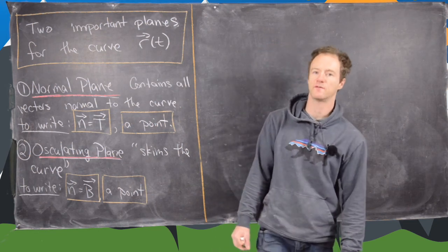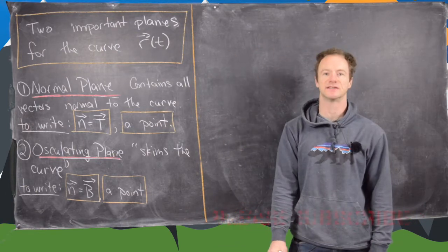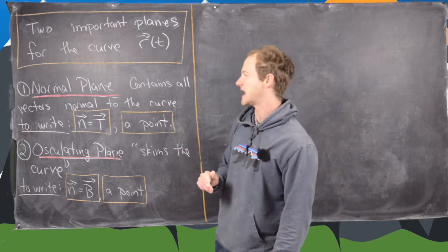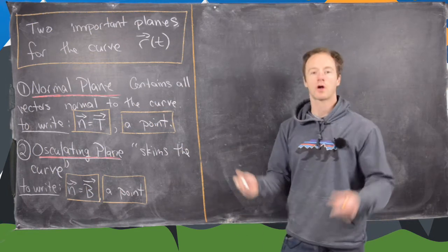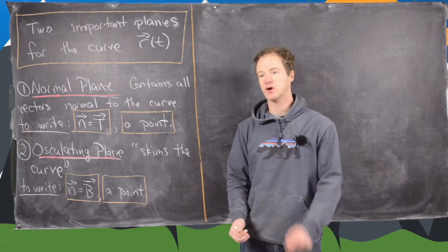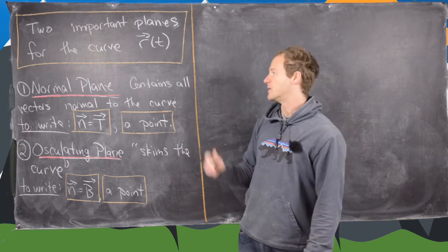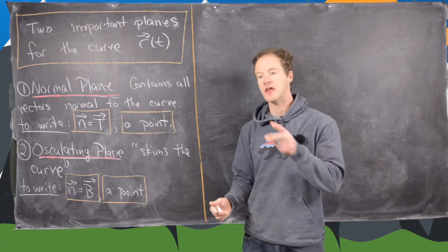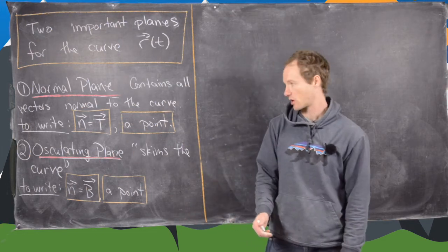In the last video we looked at three important vectors associated with a curve, and here we're going to look at two important planes associated to a curve. So the first one is the normal plane, and that contains all vectors that are normal to the curve. In order to write the equation of a plane, we need a vector which is normal to the plane. If this normal plane has to contain all vectors normal to the curve, then the vector that is normal to that plane will be tangent to the curve.